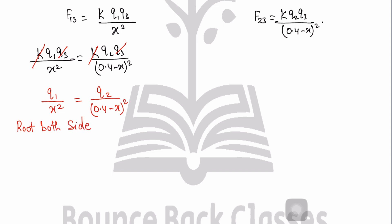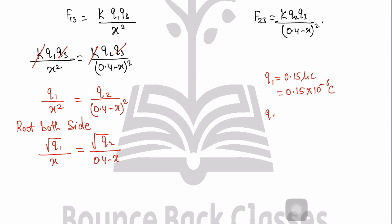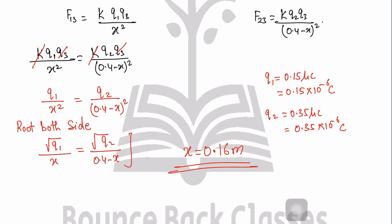Taking square roots: √q1 / x = √q2 / (0.4 − x). Place the values: q1 = 0.15 microcoulombs = 0.15 × 10⁻⁶ C, q2 = 0.35 microcoulombs = 0.35 × 10⁻⁶ C. Solving, x = 0.16 meters. That's clear. I will meet you in the next question, question number 17.